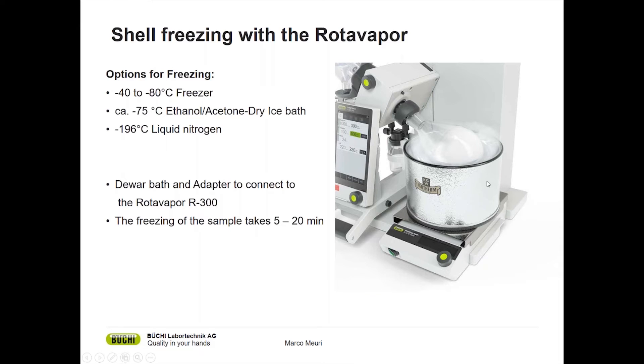What we recommend if you work with manifolds and round bottom flasks is that you use a cooling bath, as you can see in the picture, with dry ice and ethanol or acetone, and you use a rotary evaporator R300 and rotate the flask. You can attach your sample, dip the flask into the cooling bath and start the rotation. It will take about 5 to 20 minutes depending on your sample and the amount until your sample is completely frozen and can be attached to the freeze dryer.